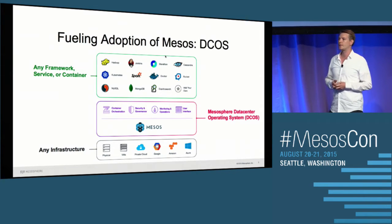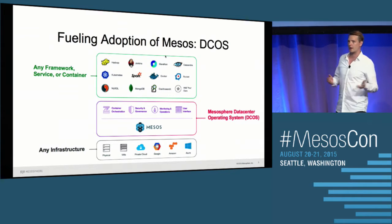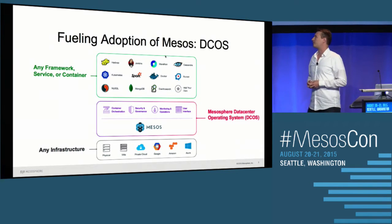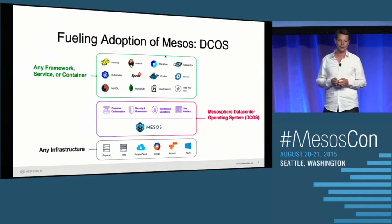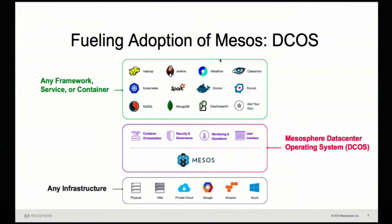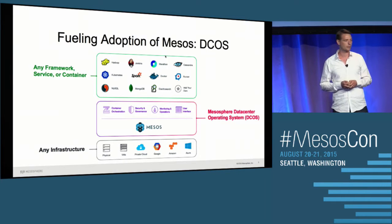How many of you have heard of DCOS? Most of you — awesome. DCOS really packages Mesos and makes it consumable for everybody. It contains Marathon, a package repository from which you can install things such as Kubernetes, Cassandra, Spark, and a number of frameworks. On top of that, it comes with a graphical user interface, a command line interface, and we also added security.